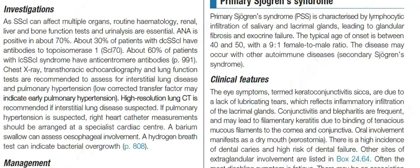About 60% of patients with limited cutaneous systemic sclerosis have anti-centromere antibodies. Chest X-ray, transthoracic echocardiography, and lung function tests are recommended to assess for interstitial lung disease and pulmonary hypertension. Low corrected transfer factor may indicate early pulmonary hypertension. High-resolution lung CT is recommended if interstitial lung disease is suspected. If pulmonary hypertension is suspected, right heart catheter measurements should be arranged at a specialist cardiac center. A barium swallow can assess esophageal involvement, and a hydrogen breath test can indicate bacterial overgrowth.